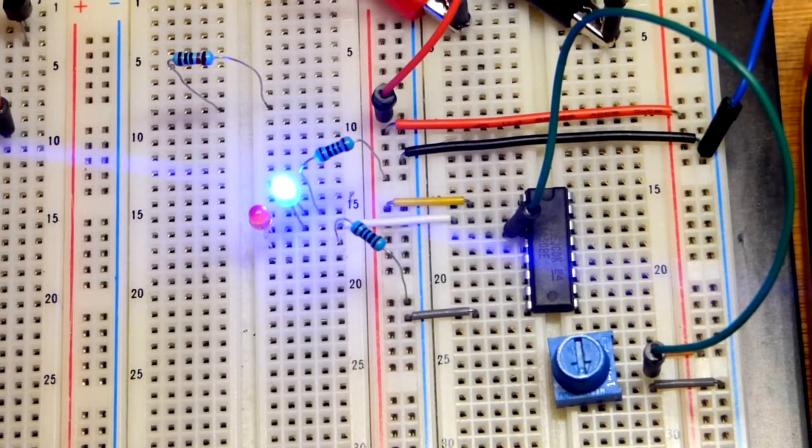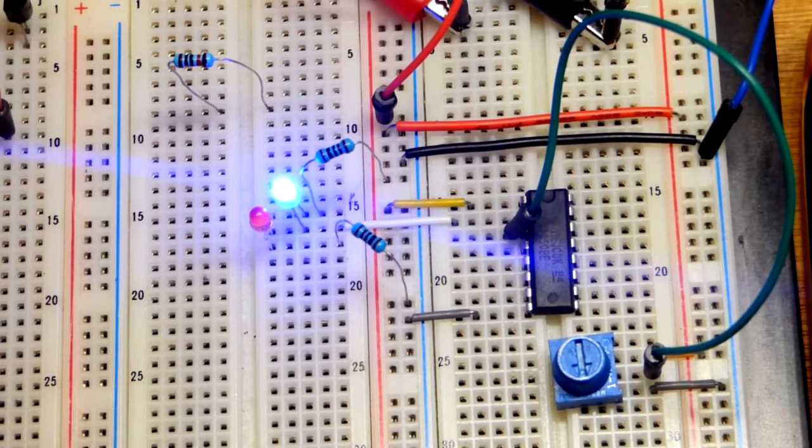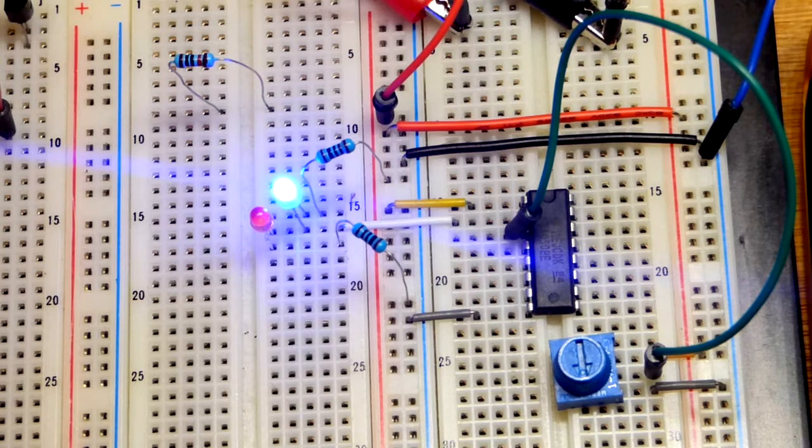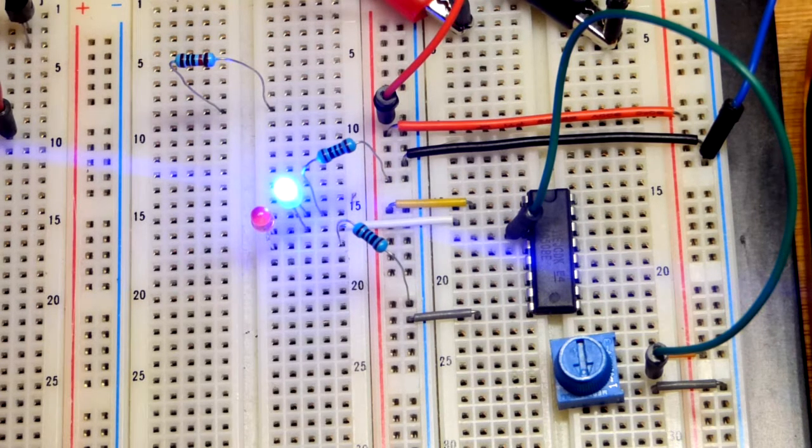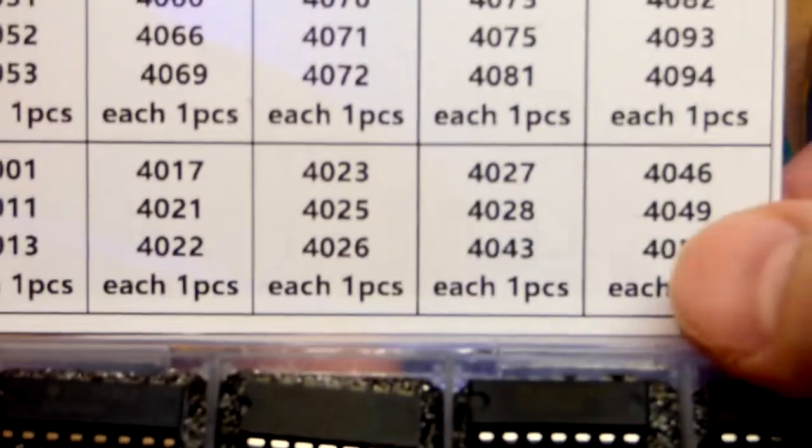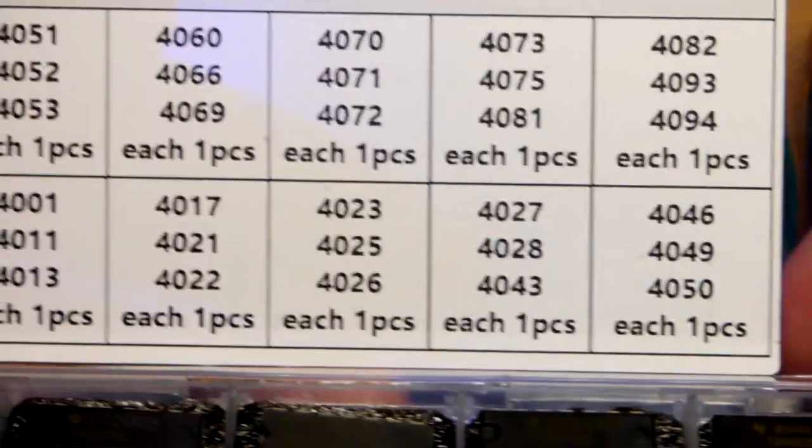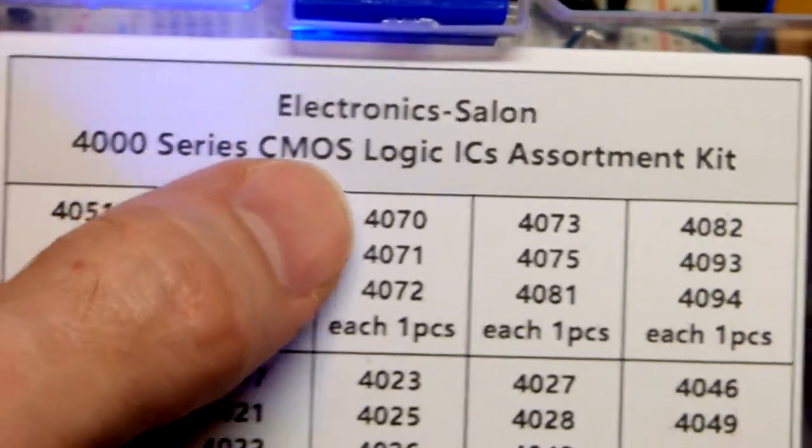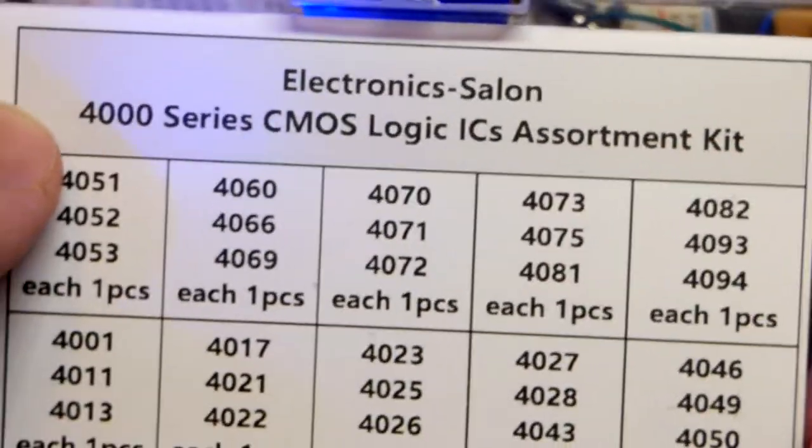So now in this video we're going to look at sourcing and sinking current. This is a demonstration video and we are using the 4050, a 4000 series CMOS integrated circuit.